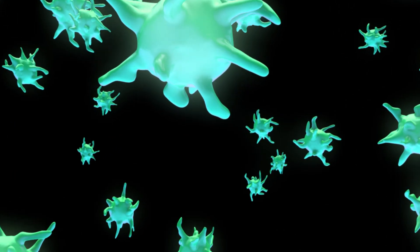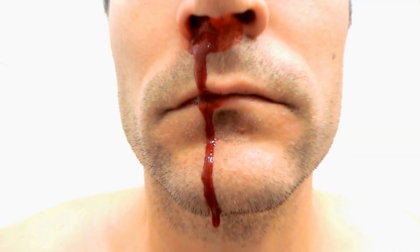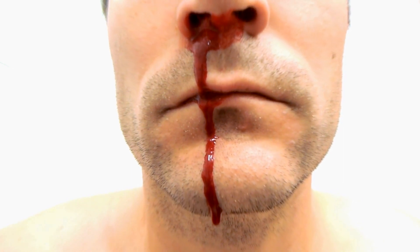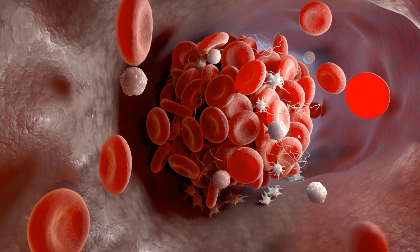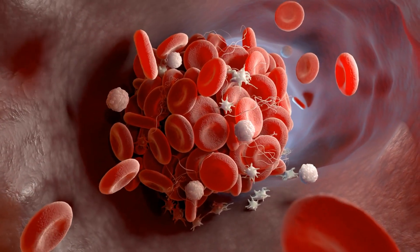Platelets prevent blood clotting. When your blood vessels are injured, you start to bleed. Your platelets stop the bleeding by clumping together and sealing the hole.